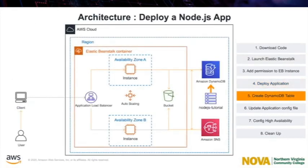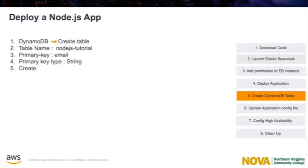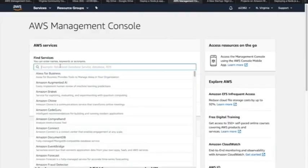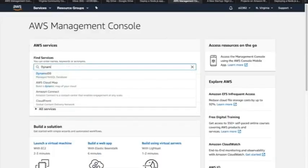To use an external DynamoDB table with an application running in Elastic Beanstalk, first create a table in DynamoDB. When you create a table outside of Elastic Beanstalk, it is completely independent of Elastic Beanstalk and Elastic Beanstalk environments, and will not be terminated by Elastic Beanstalk.